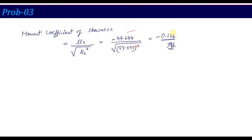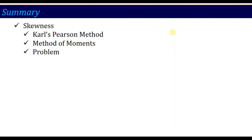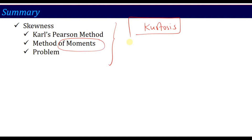Try this question yourself. If you have done it yourself, that's a very good thing. My advice is to do it once more on your own — your confidence will improve greatly. With this, the skewness part is over. Skewness calculation mainly uses the method of moments, which is why moments are very, very important. The second characteristic, which we will discuss in the next lecture, is called kurtosis. Thank you.